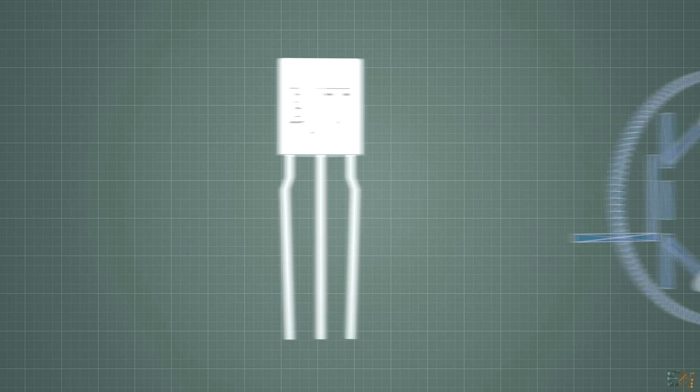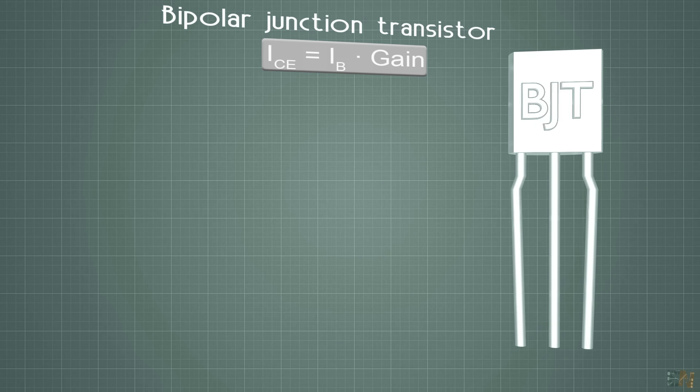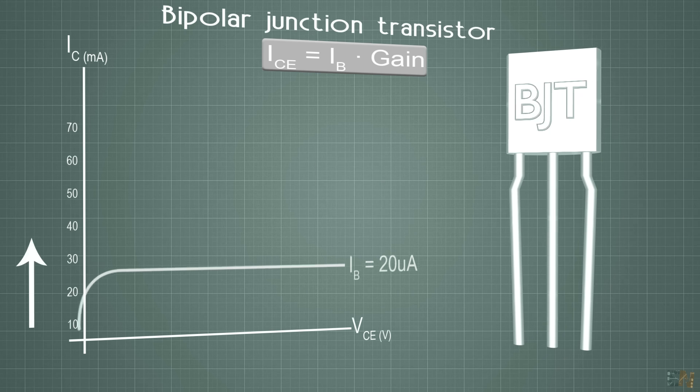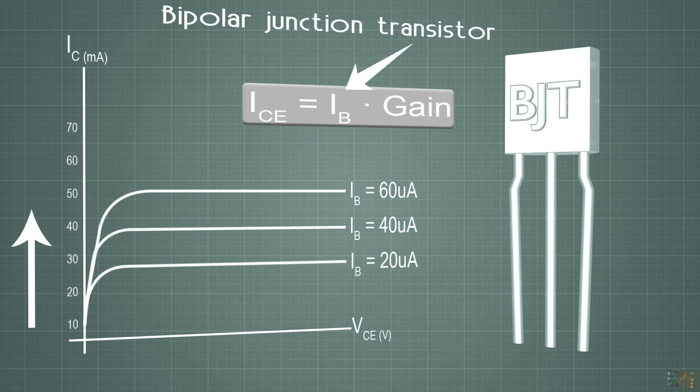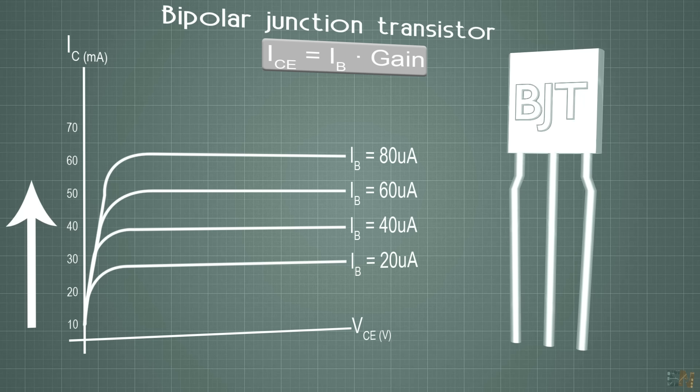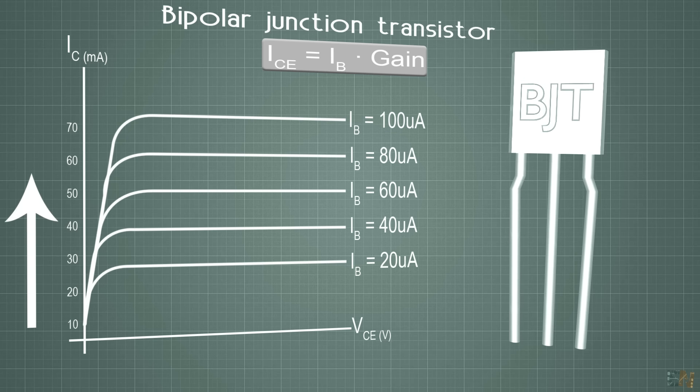The second comparison will be the control type of each of these transistors. For the BJT, the output current is a function that depends on the current amount applied to the base. More current applied to the base means more current flow between the collector and the emitter. That means that the gain is given by the current applied to the base.